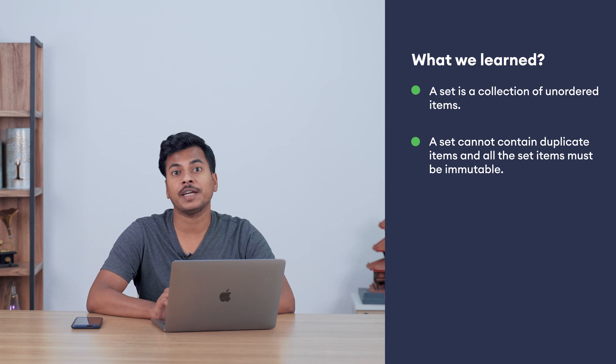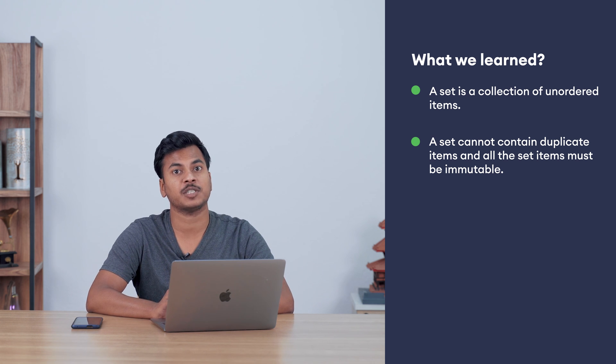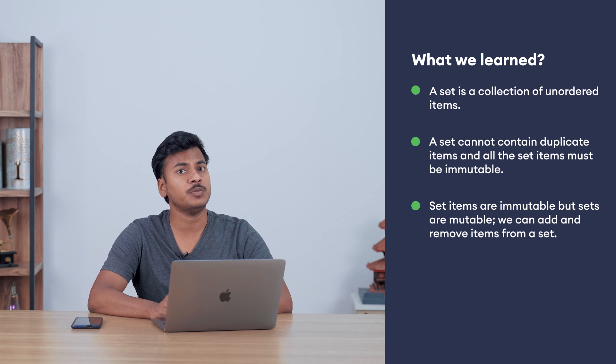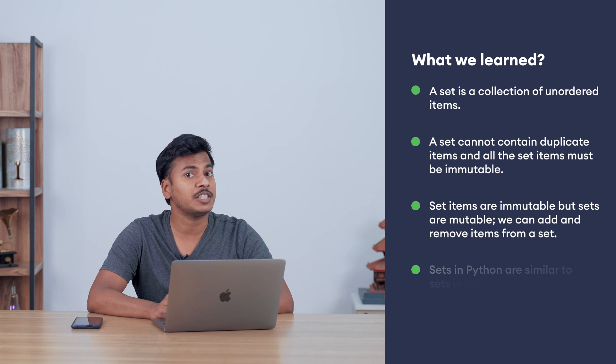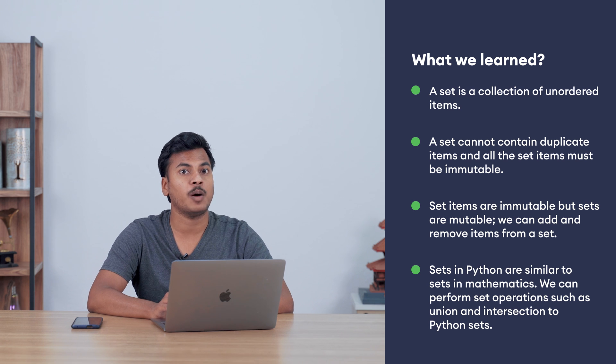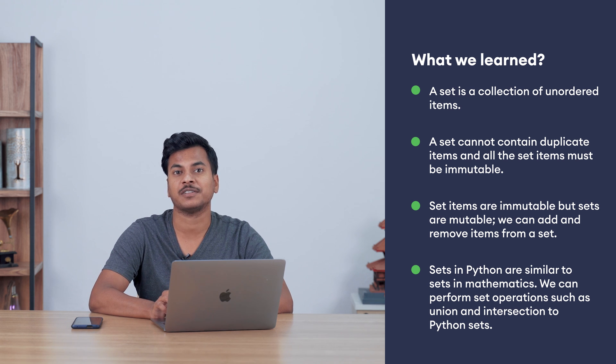Now, let's recap what we learned in this video. A set is a collection of unordered items. Since the items do not have any order, they also do not have any indexes. A set also cannot contain duplicate items and all items of a set must be immutable. Although the items of a set need to be immutable, sets themselves are mutable and we can add and remove items from a set. Sets in Python are similar to sets in mathematics. That's why we can perform operations like union and intersection of sets.